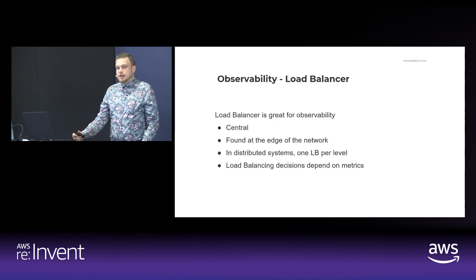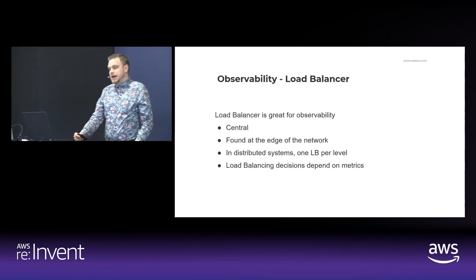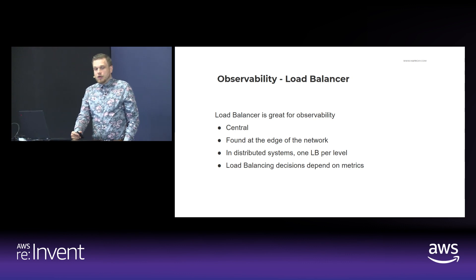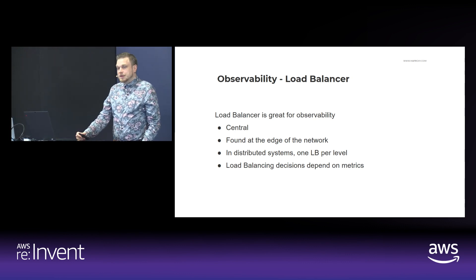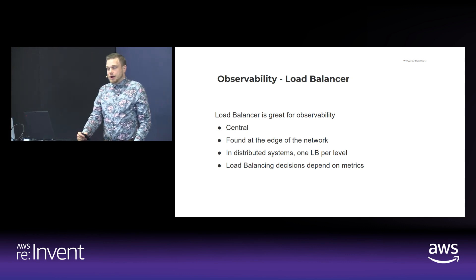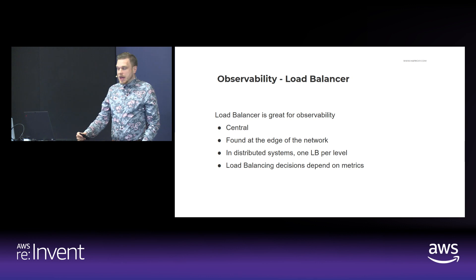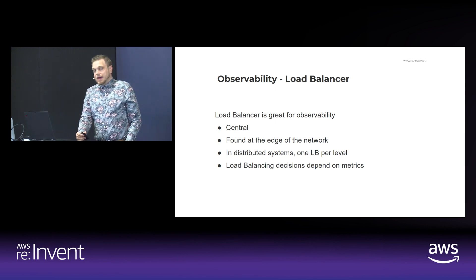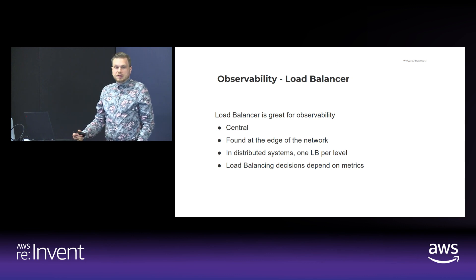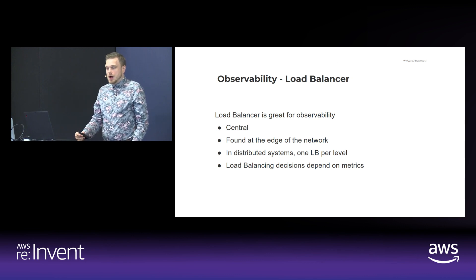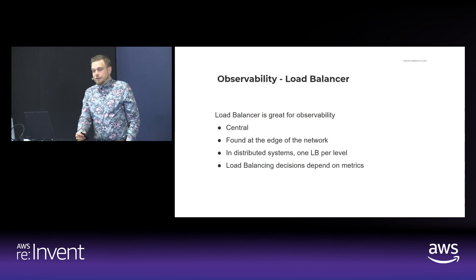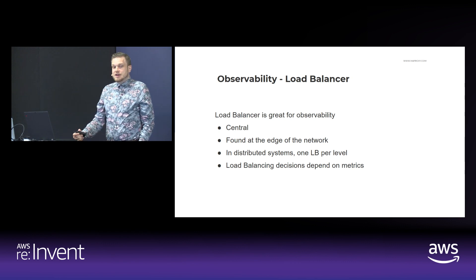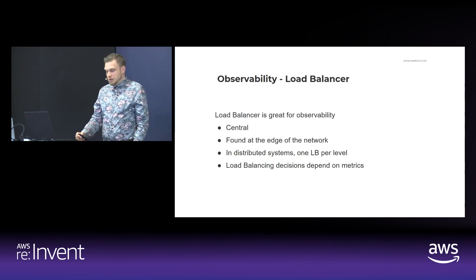What role can the load balancer play in observability? The load balancer is a great observation point. It's typically centrally located and found at the edge of the network, but in distributed systems we would have one load balancer per level of your application. Frequently, the load balancing decisions can even depend on various metrics that are available.